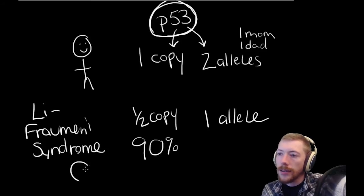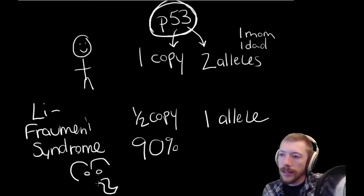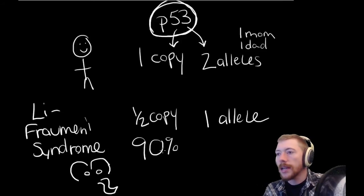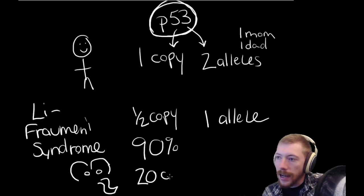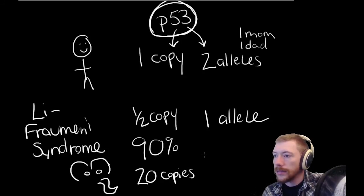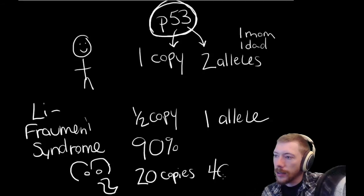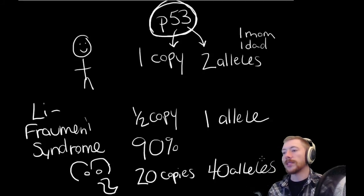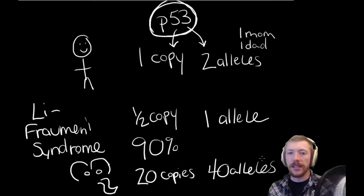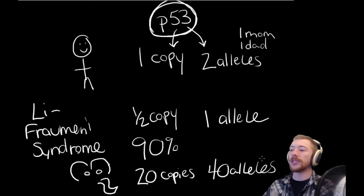So what did the authors of this paper find out about elephants? Well, it turns out that elephants actually have 20 copies of P53. So they have 40 alleles of P53. They just have a ton of guardians. They have a ton of guardians in their genome.